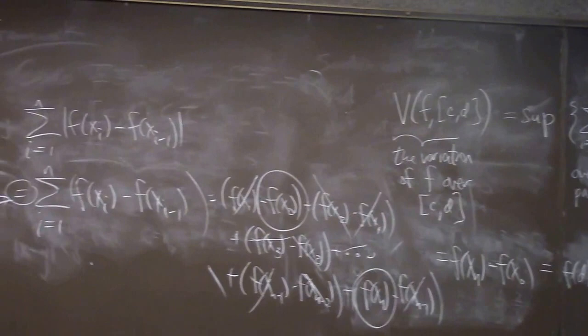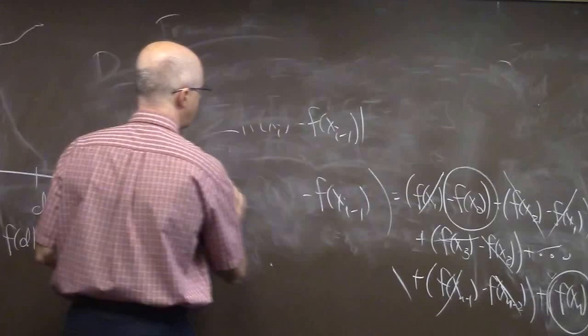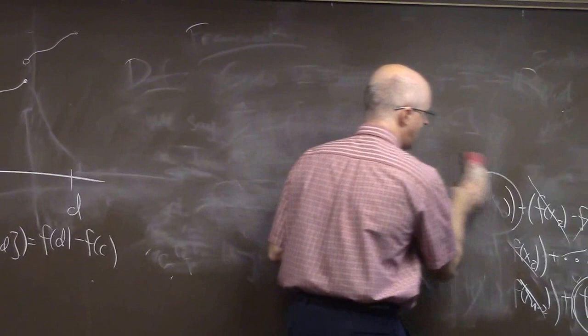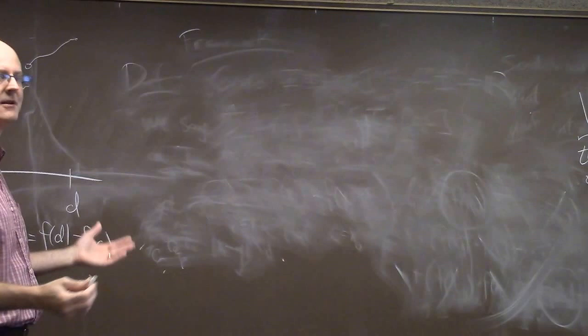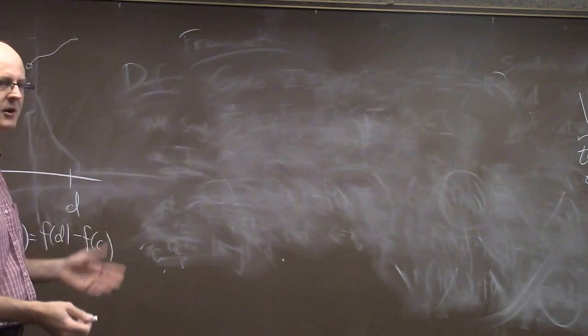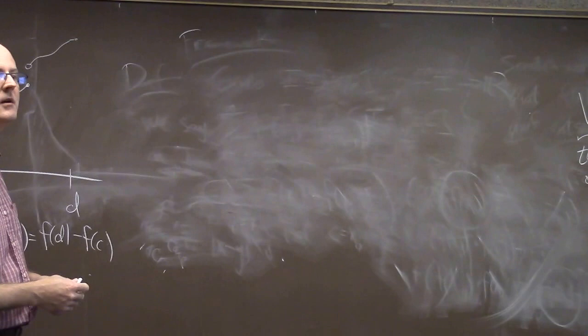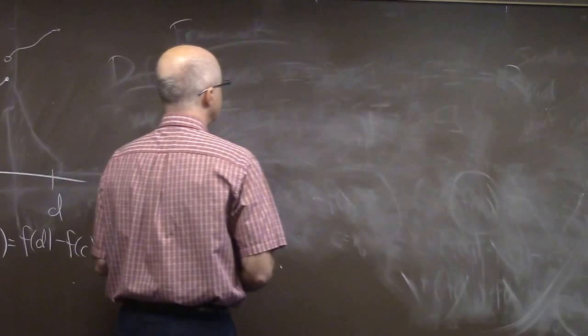The next easiest kind of function to think about calculating the variation for is one that's not necessarily monotone, but has nice discontinuities, maybe just jump discontinuities, and also has only finitely many oscillations if it oscillates up and down. Like any polynomial or even a trig function over a finite interval. So the decreasing would be f of c minus f of d.